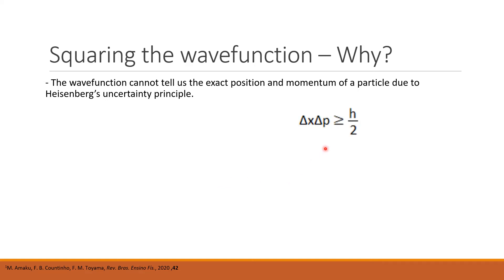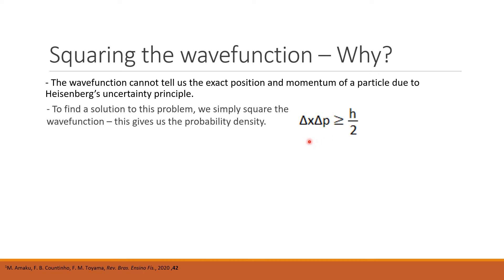Here is the uncertainty principle. For large objects at the macroscale you can ignore it; however, for small molecules, when you're dealing with uncertainties that are picometers or nanometers, it is quite important. To find a solution to this problem, all we have to do is square the wave function, and this will give us the probability density and tell us where we're most likely to find our particle.